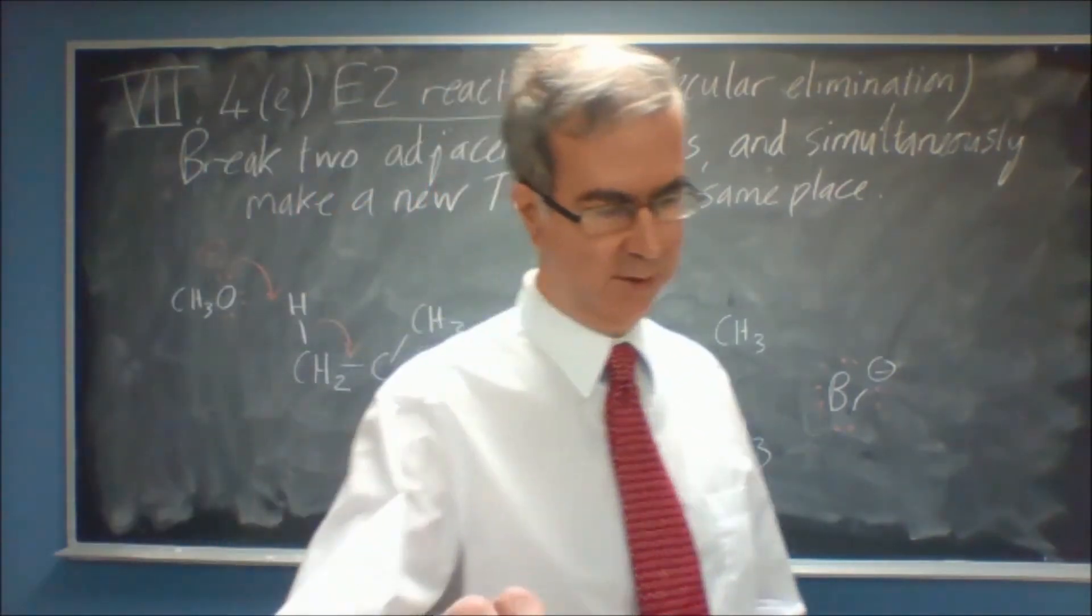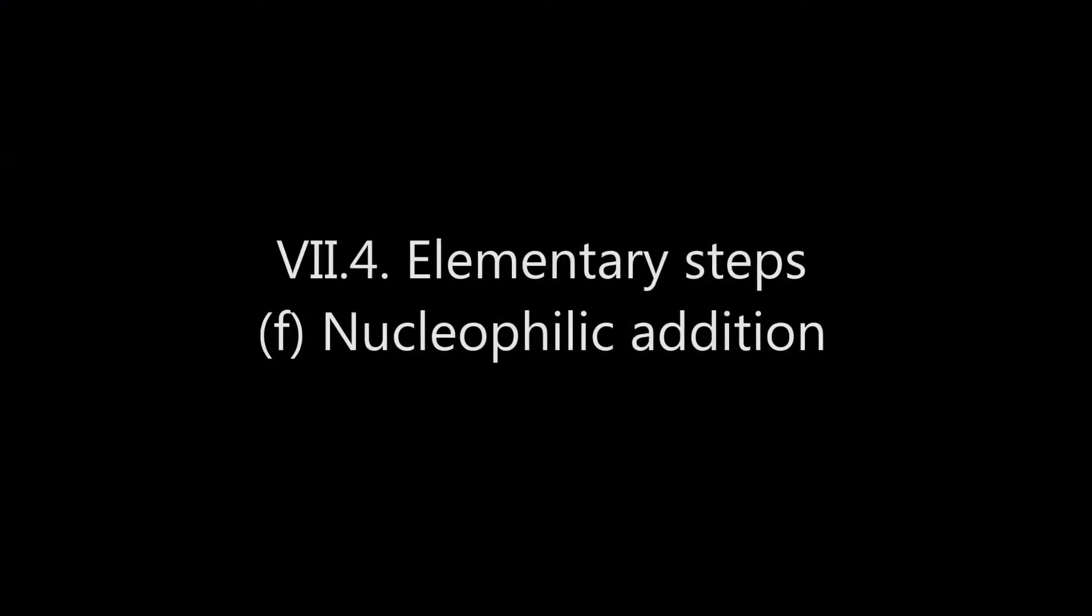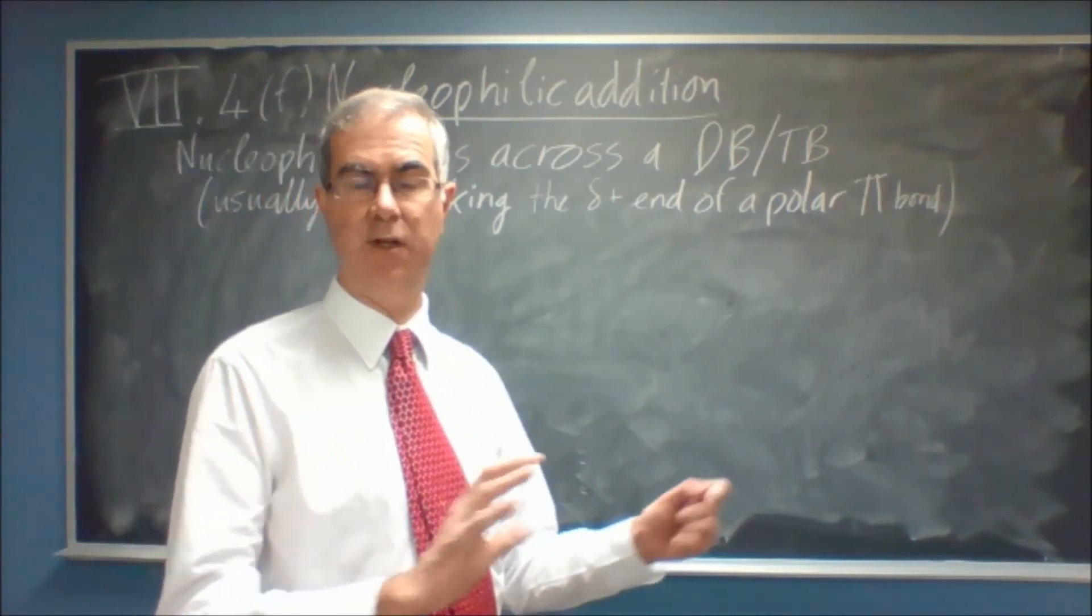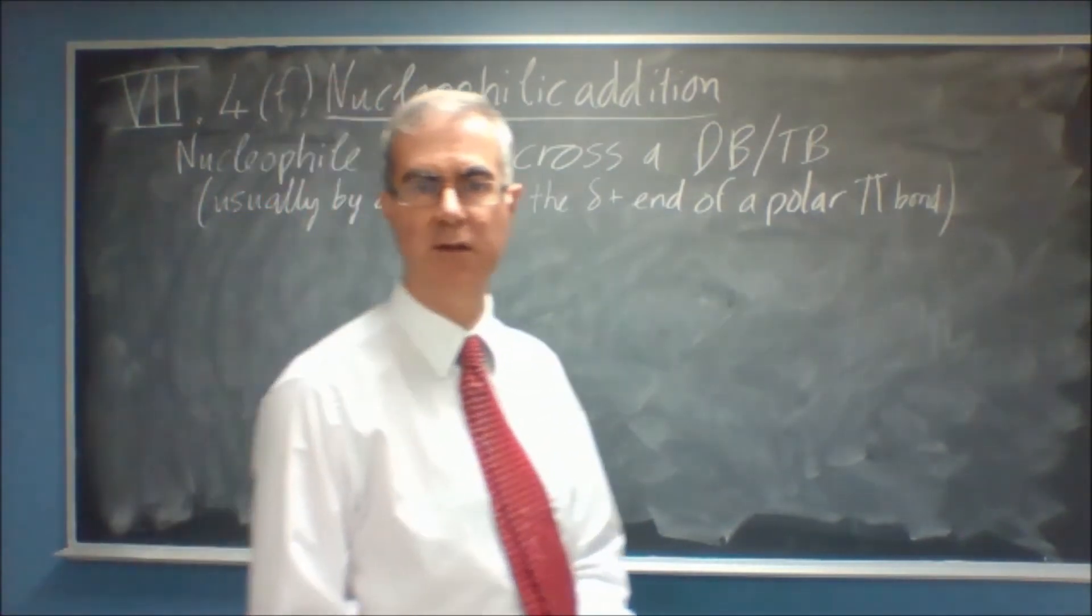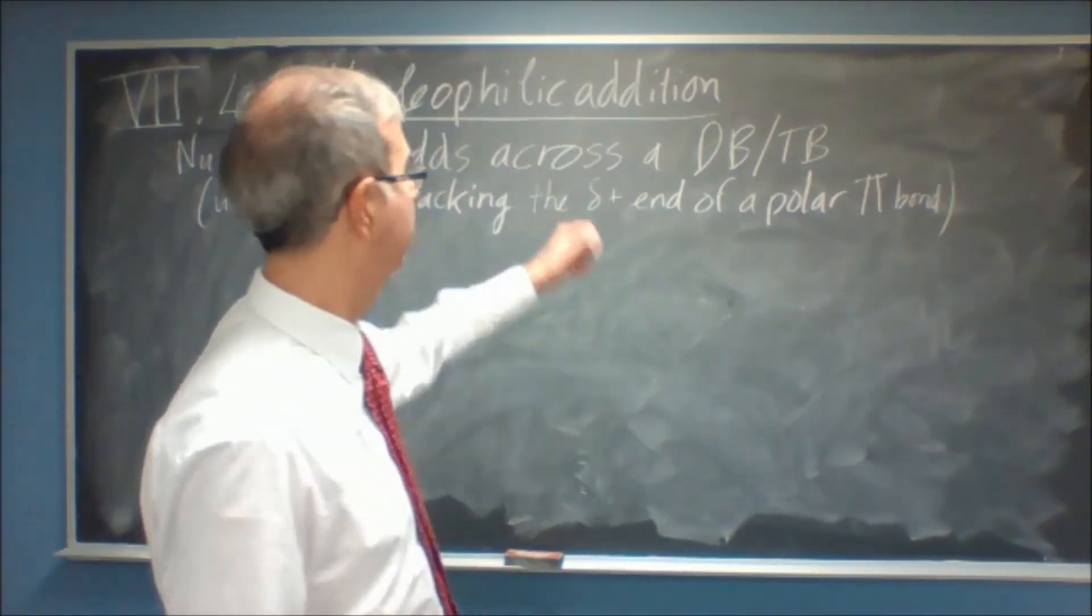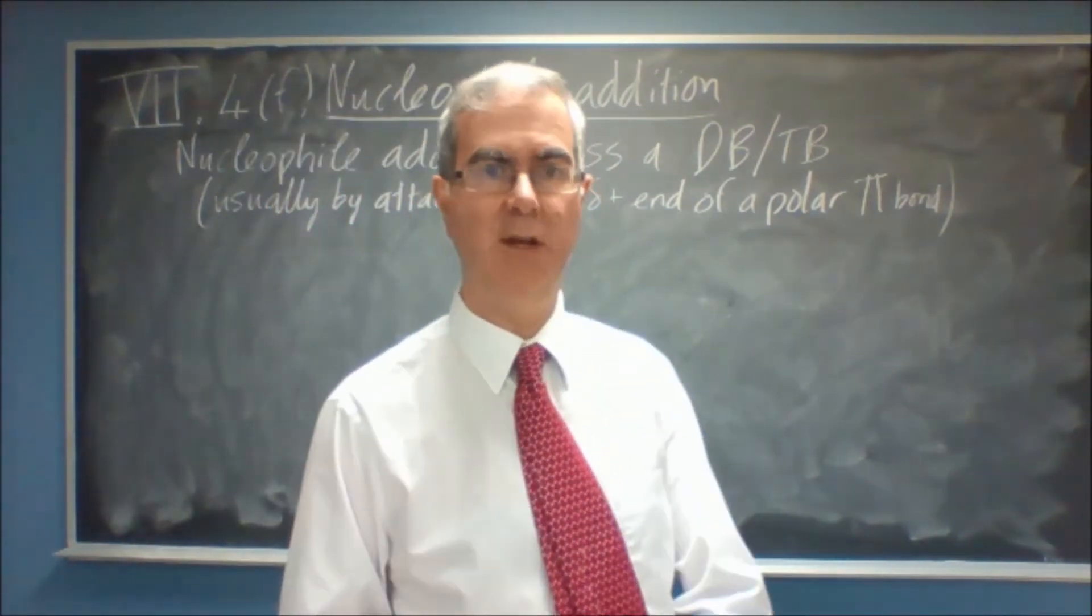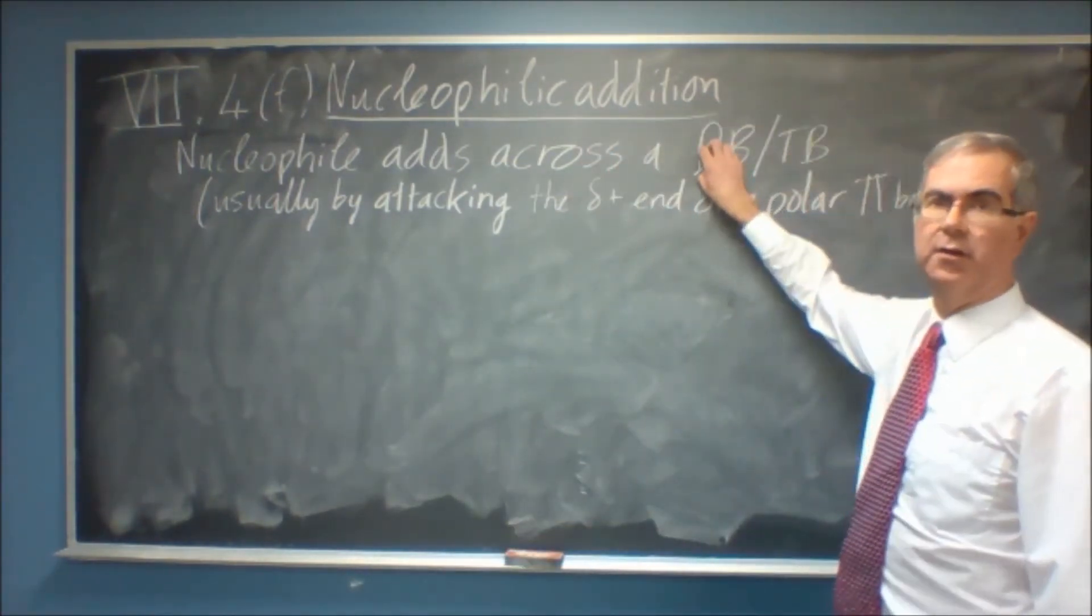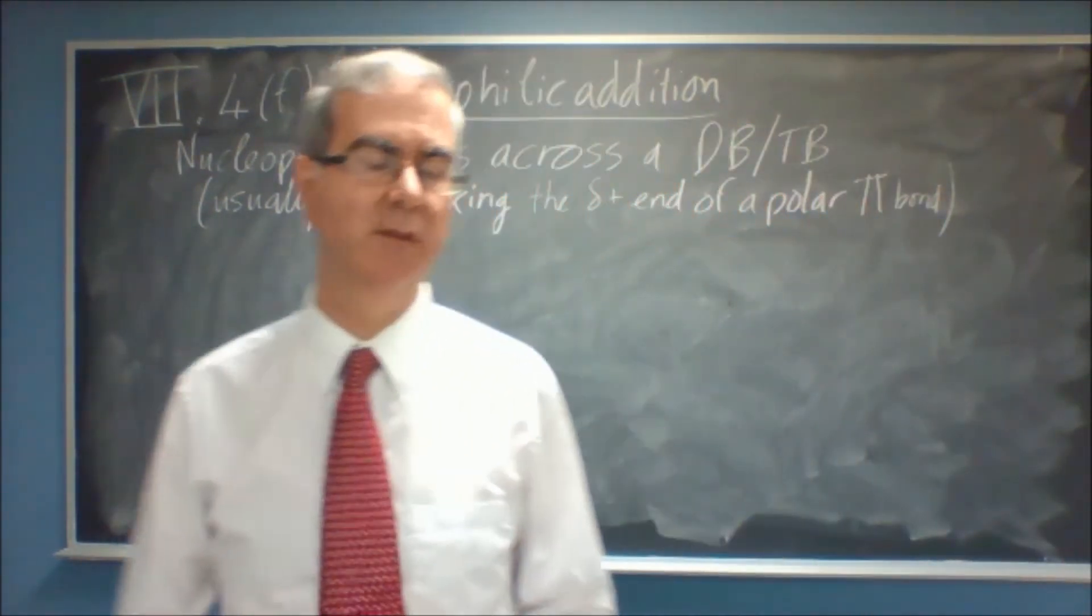So next I'm going to cover nucleophilic addition and nucleophilic elimination. There are two addition elementary steps. One involves a nucleophile adding to the electrophilic end of a polar pi bond. And then we'll also cover, in a bit, electrophilic addition to pi bonds. It could be a double bond or a triple bond. In fact, we'll see normally a lot more double bonds than triple bonds.